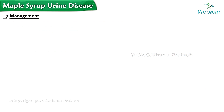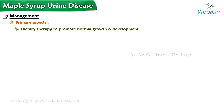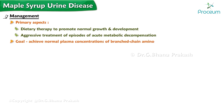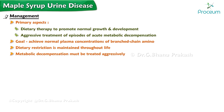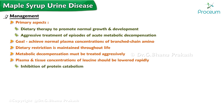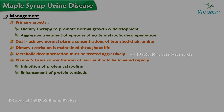Management of maple syrup urine disease has two primary aspects: dietary therapy to promote normal growth and development, and aggressive treatment of episodes of acute metabolic decompensation. The goal of dietary therapy is to achieve normal plasma concentrations of branched-chain amino acids, and dietary restriction is maintained throughout life. Episodes of metabolic decompensation must be treated aggressively. Plasma and tissue concentrations of leucine should be lowered rapidly by inhibition of protein catabolism and enhancement of protein synthesis.